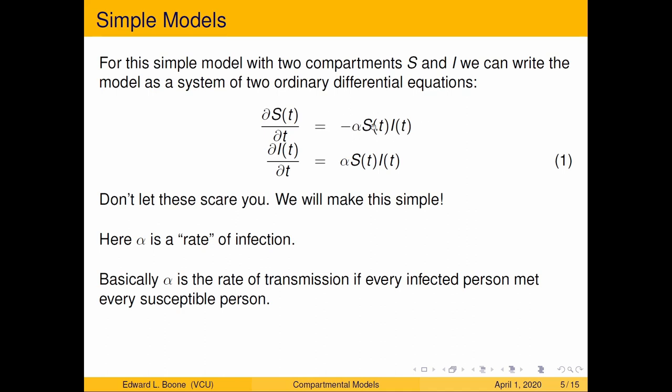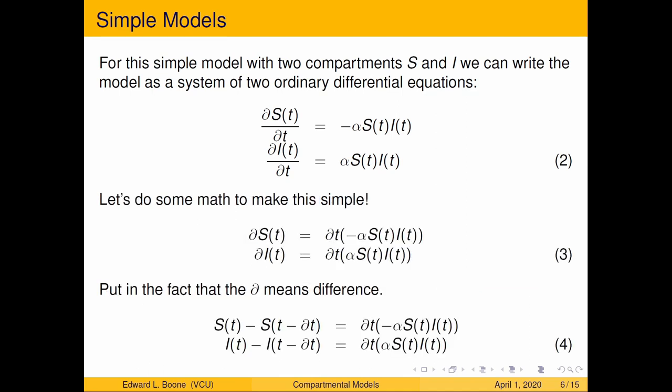Now this is going to be a really tiny number. The change is going to be how many people we have now and we're going to send them to the I group. You don't have to be an expert at differential equations to understand this because we want to make this as simple as possible. But first we're going to do some math to make this simple.